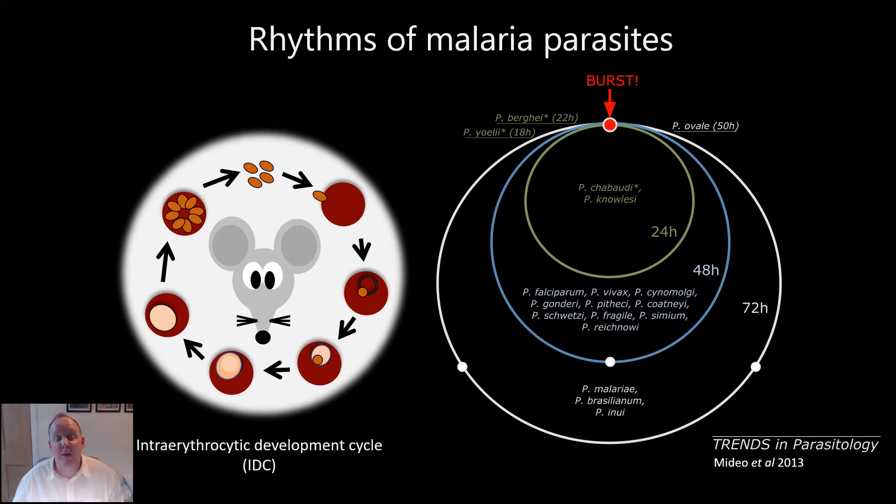In our lab, we use rodent malaria as a model organism. Malaria parasites have rhythms in their asexual development inside the host, termed the intraerythrocytic development cycle, or thankfully, the IDC.